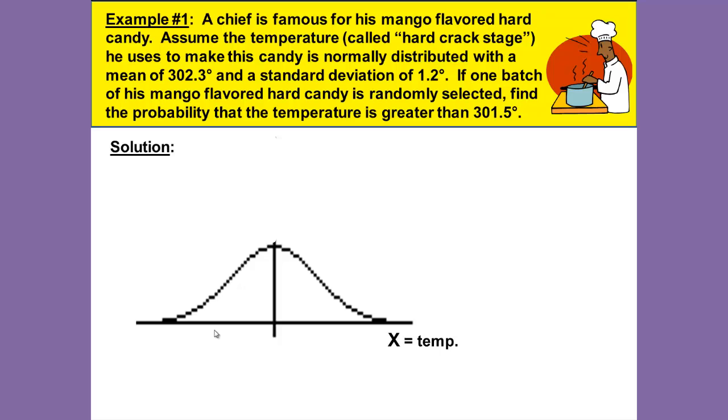The first thing you want to do is to draw your normal curve. Once you've drawn your normal curve, remember that the number line underneath is the X's and you want to label that the temperatures because what we're talking about is the temperatures. Then we want to place and label the mean, and the mean is 302.3 degrees as given in our problem and we have a standard deviation of 1.2.